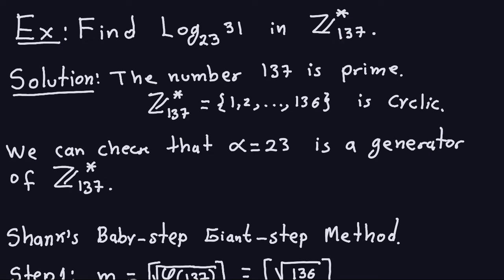The first thing to mention is that 137 is a prime number. That's important because the group will be cyclic in this case, and I know exactly the elements — the numbers from 1 all the way to 136. Also important to note that 23 is a generator of that group, which we can verify with techniques from previous videos. We're doing discrete logs here for cyclic groups, though the general discrete logarithm problem also exists for non-cyclic groups.